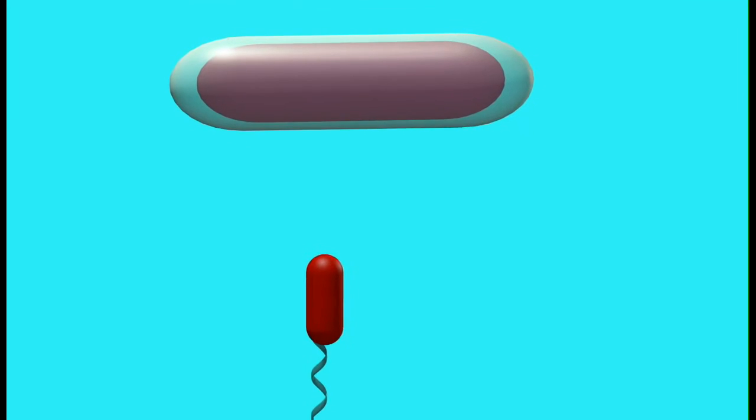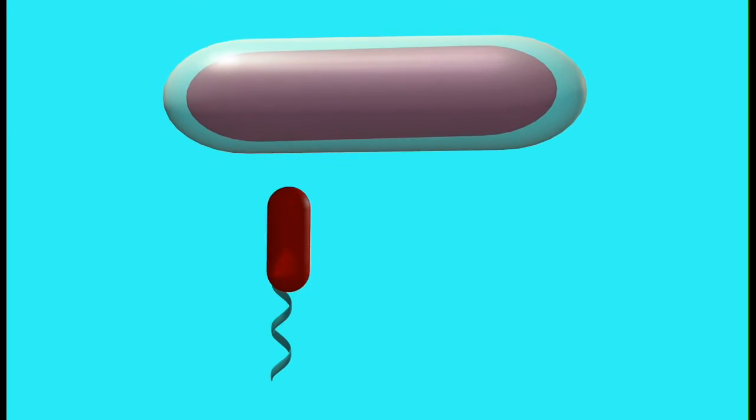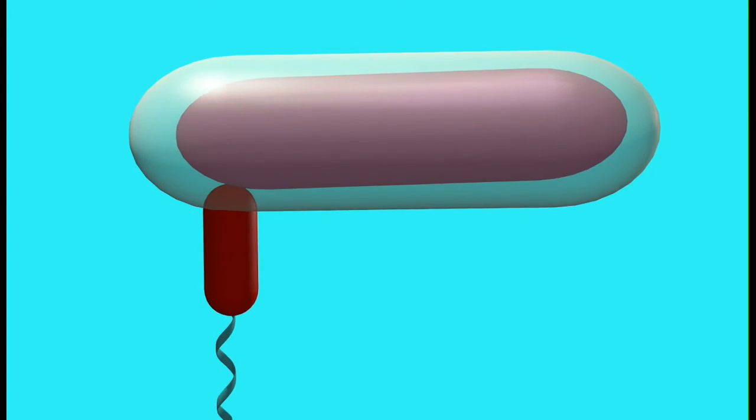Bdellovibrio is an example of a predatory bacteria. It's an obligate, aerobic, gram-negative bacterium,